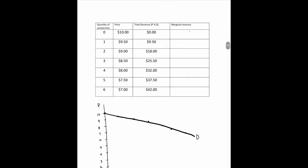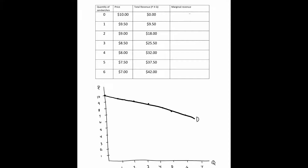Now let's look at the numbers behind this. Looking at a table that shows quantity of sandwiches, price of sandwiches, and total revenue — calculated as price times quantity — we can also find marginal revenue. We can find the demand curve by graphing quantity on the x-axis and price on the y-axis: 0 and $10, 1 and $9.50, 2 and $9, 3 and $8.50, 4 and $8, 5 and $7.50, and so on. From total revenue we can then calculate marginal revenue.